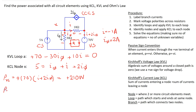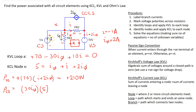Let's look at the current source. The power associated with it is the product of the voltage and the current. This current source is connected in parallel with the 30-ohm resistor, so we use that resistor to find the voltage drop across the current source. The voltage is 30 I_phi and the current is 5 amps. This current is entering the terminal marked minus, so we write the power calculation with a minus sign. Substituting the values gives minus 300 watts, showing that the current source is generating power in this circuit.